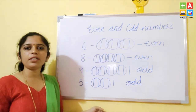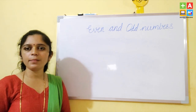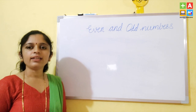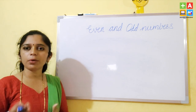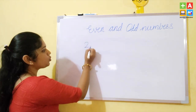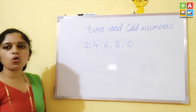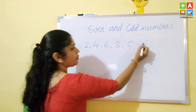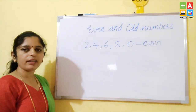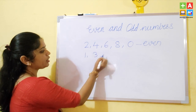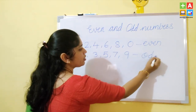Understood? So students, the numbers which come under the table of 2 are even numbers: 2, 4, 6, 8, and 0 — these are the even numbers. The numbers which do not come under the table of 2 — meaning 1, 3, 5, 7, 9 — these are the odd numbers.